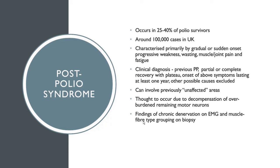The diagnosis is clinical. There's what's known as the March of Dimes criteria for it, and this includes things such as evidence of previous paralytic polio with recovery, new symptoms lasting at least one year, and exclusion of other possible causes of weakness. It can involve previously what the patient might have considered to be unaffected areas. For example, a patient who had weakness in the right leg that they recovered from may now present with both right and left leg weakness, which may have been due to previously subclinical involvement on the left side.